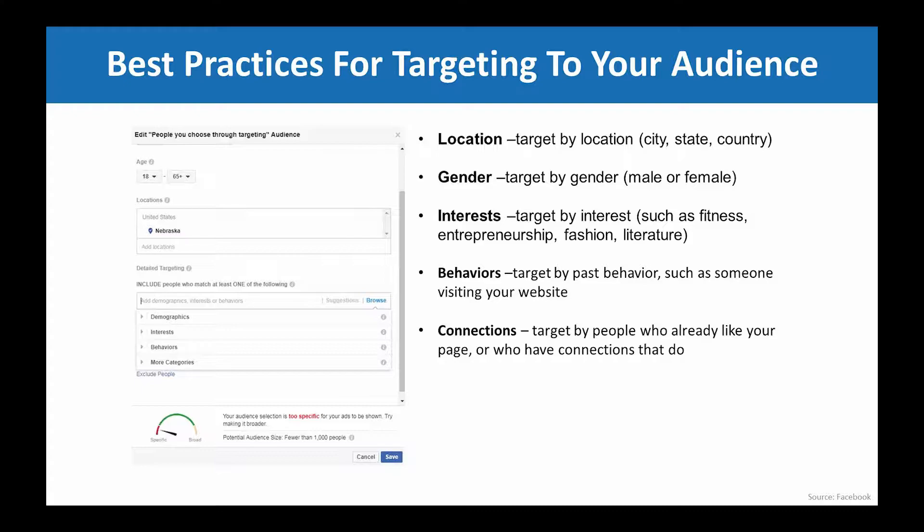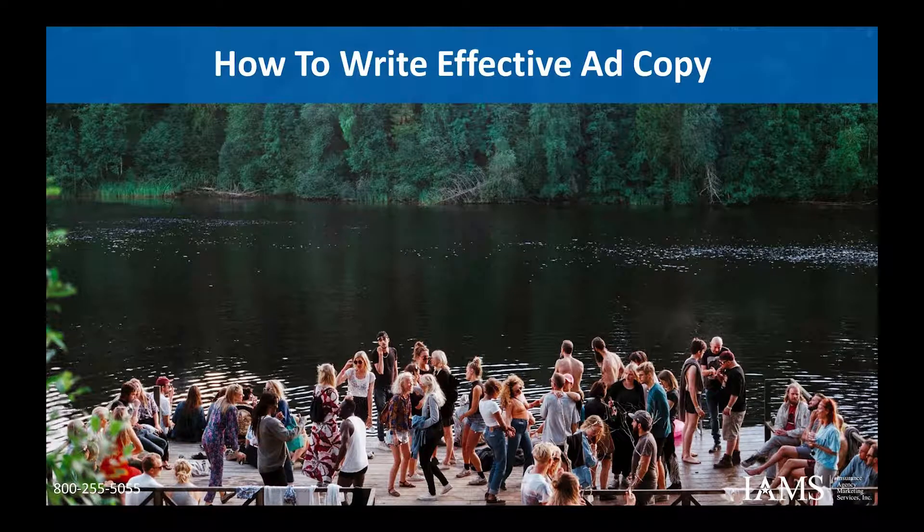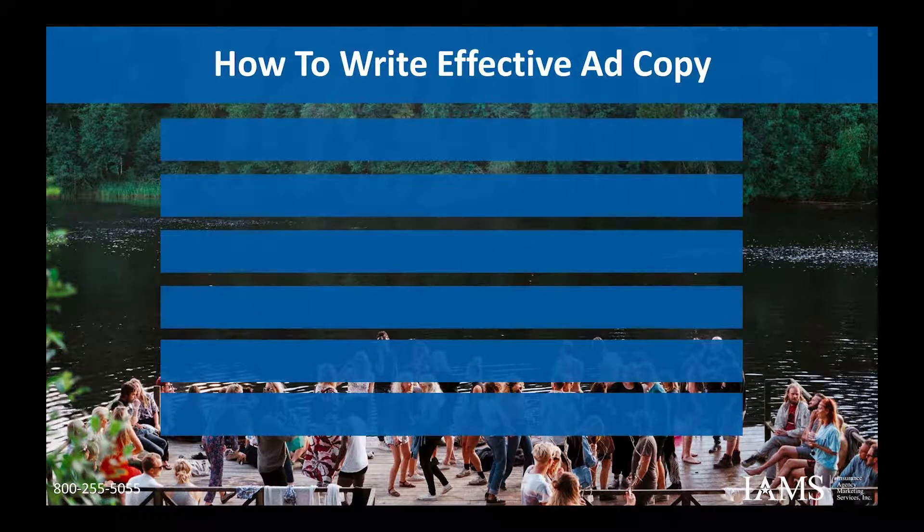You can go from an audience of a million down to just a couple thousand. This will determine exactly how your ad performs — if you're targeting someone in their mid-20s for Social Security, they're probably not going to be as interested as somebody in their 60s. Targeting is the key to Facebook ads.